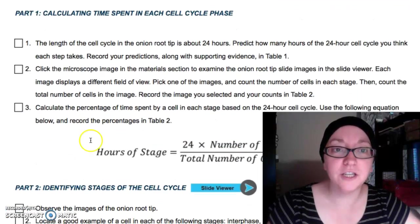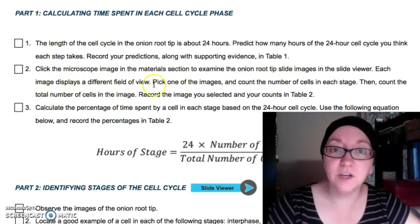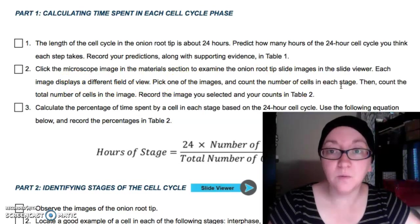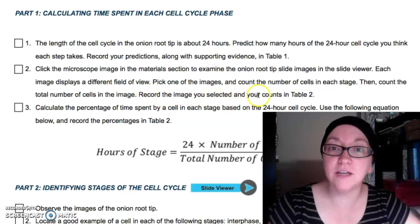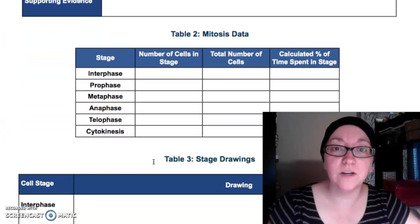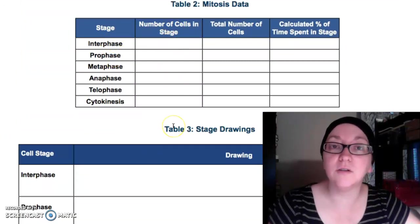Go back up to the directions. It says click the microscope image in the materials section to examine the tip slides in the viewer. Each image has a different view — pick one and count the number of cells. It doesn't matter which one you pick. You're going to count the total number of cells in the image and then record that image and your counts in table two, which asks for the number of cells in each stage.